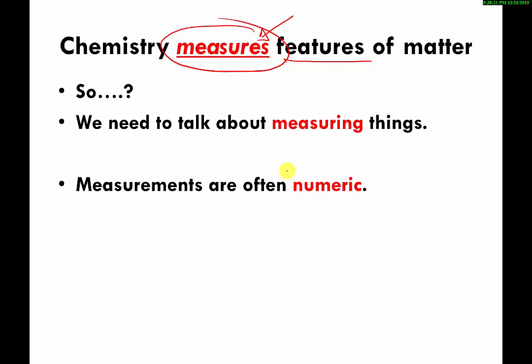One thing to point out is that measurements are often numeric. What I mean by that is when you make a measurement of something, you usually make the measurement and get a number out. So if you measure how tall something is, you'll measure it almost always numerically.